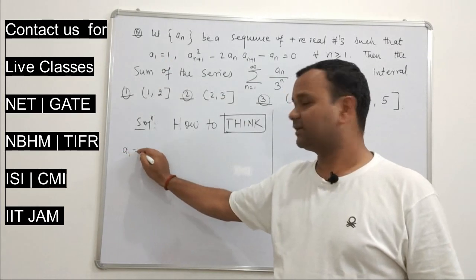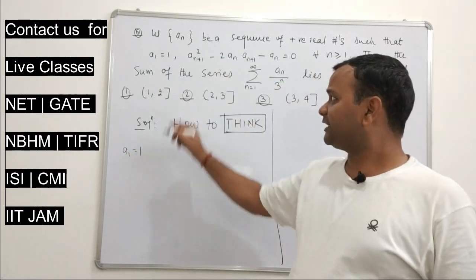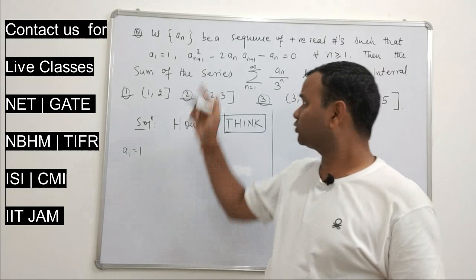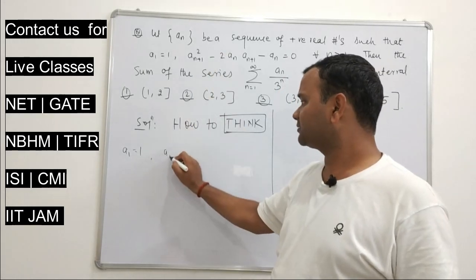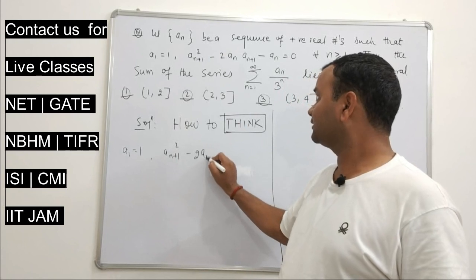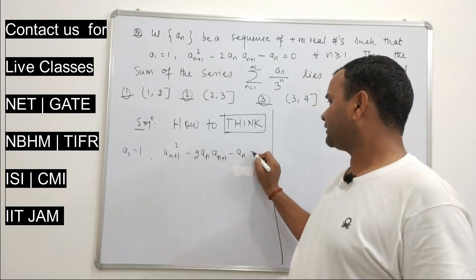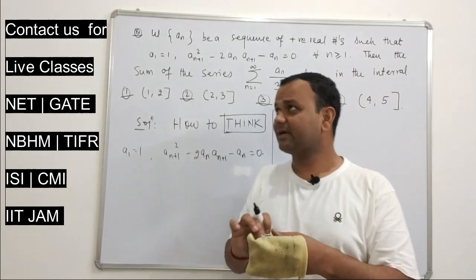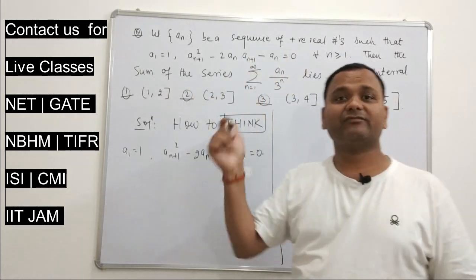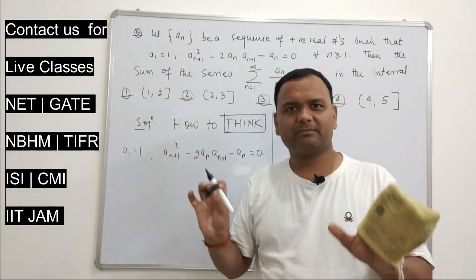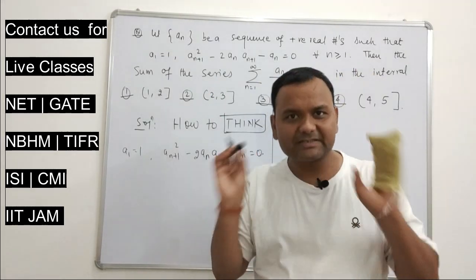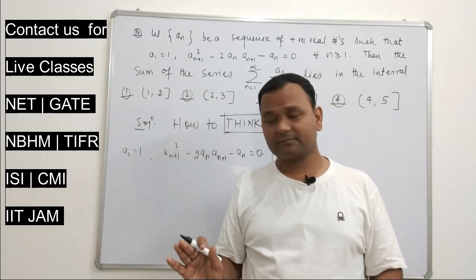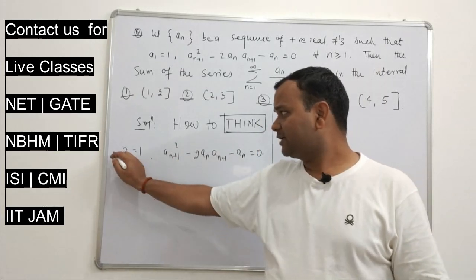a₁ is given as 1. Then a₂ you have to find, a₃, and so on. But finding the exact general term aₙ is a little difficult from this information. What you can do instead is find an estimate — because here they are not asking for the exact value; if you don't know the exact value, that's completely fine. Give an estimate — that's what you have to do.